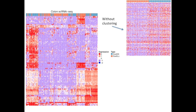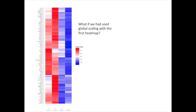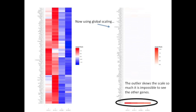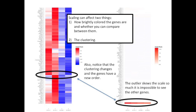Without the clustering, we have a total mismatch, and it's hard to see what's what. Without clustering or scaling, we have a total disaster. Before we move on to the details of scaling and clustering, here's a quick aside. What if we had used global scaling with the first heat map? When we do this, we see that the outlier skews the scale so much that it's impossible to see the other genes. And now, back to the action.